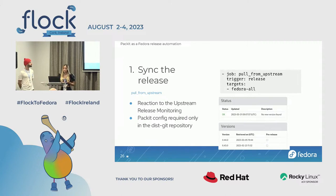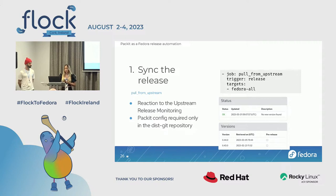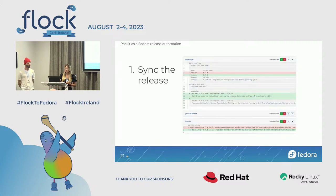Sometimes you have a package in Fedora but don't have access to the upstream git repository. In that case, you can use Pull From Upstream. The only thing you need to do is place the configuration file in dist-git and add the Pull From Upstream job. Packit will then react to upstream release monitoring messages and bring all changes to the Fedora dist-git. The PR Packit opens shows the updated version, new changelog entry, and updated sources.